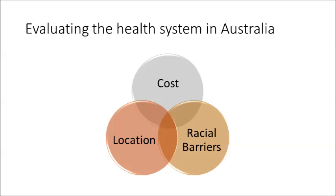The next variable is location. Think about a rural versus an urban dweller who would have a different level of access to health care. There are fewer doctors in rural versus urban areas, and in some towns there's only one doctor. This is quite a problem when that doctor chooses to relocate, retire, or even goes on holidays. And finally, there are racial barriers — for example, in Indigenous health or the provision of health care to non-English speakers.